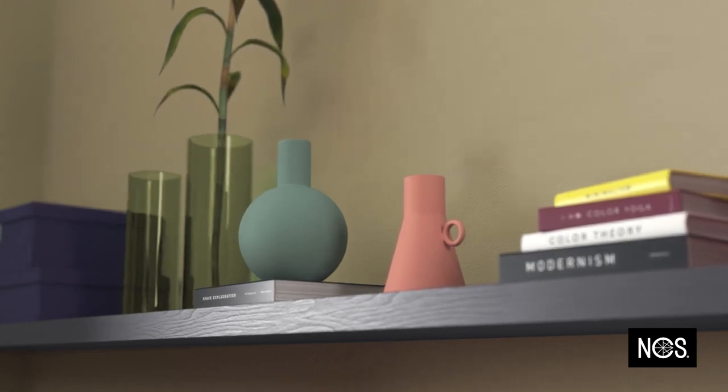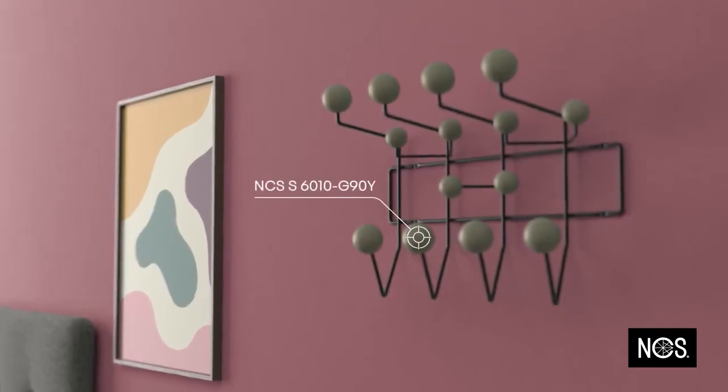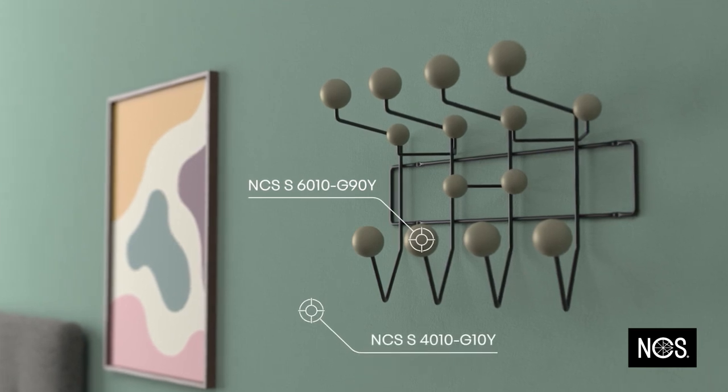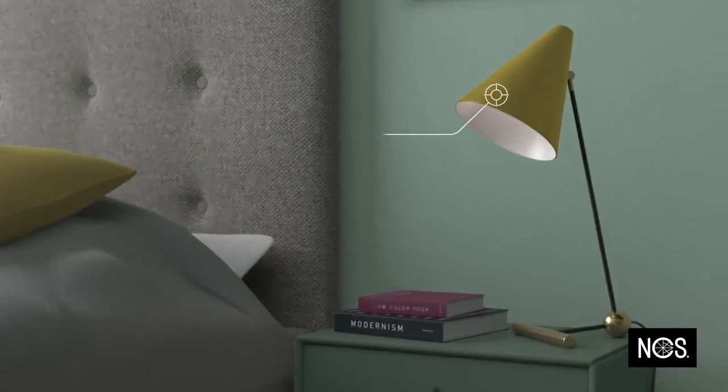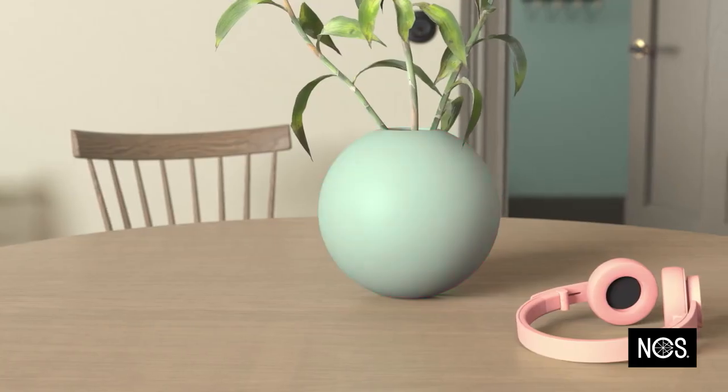So, when you want to describe a color, you need to be precise with what you mean. By describing colors with NCS, the natural color system, it allows you to describe any color exactly the way you see it.